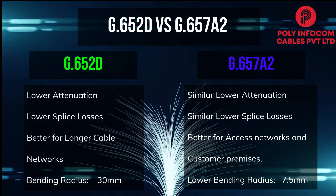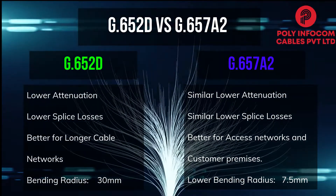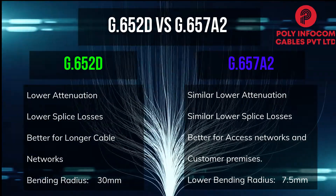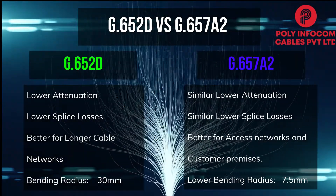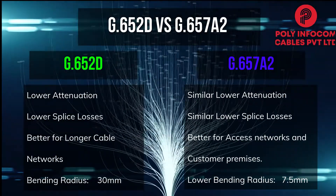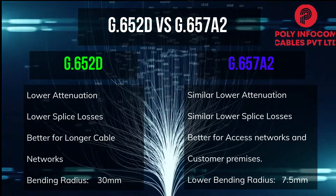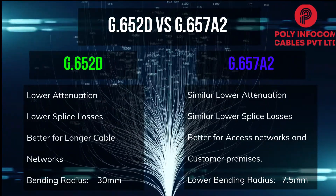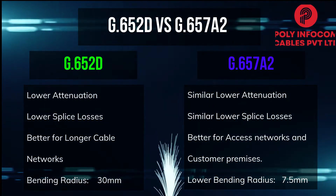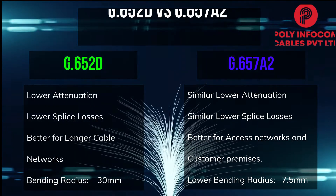Comparing G652D and G657A2 fibers: both fibers have lower attenuation and lower splice losses. The key difference is in macro bend radius — G657A2 fibers have greater resistance to bending losses and more flexibility, which may allow better cable management in congested areas.